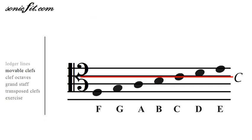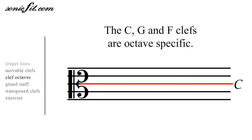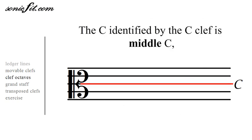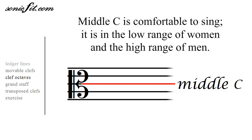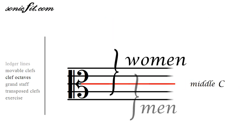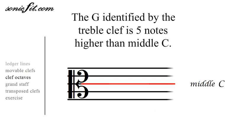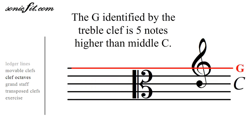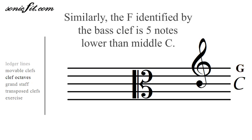In fact, these clefs are octave specific. The C clef identifies middle C — a note that is comfortable to sing. It's high in the guy's range and low in the lady's range. The treble clef, the G clef, is higher than that. It refers to the G five notes higher than C, and it's mostly for the ladies and higher notes.